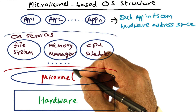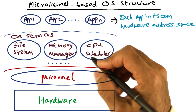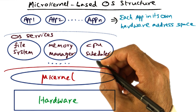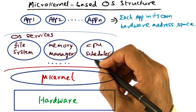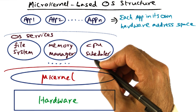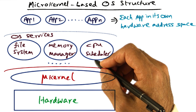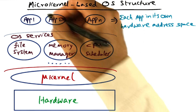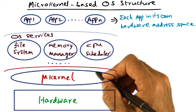This need for customization and the opportunity for customization is what spurred operating system designers to think of a structure of the operating system that would allow customization of the services, and gave birth to the idea of a microkernel-based operating system.